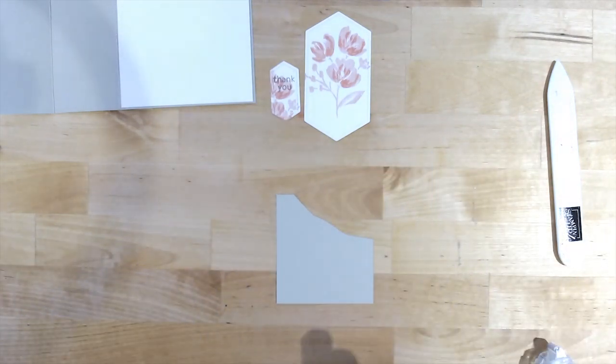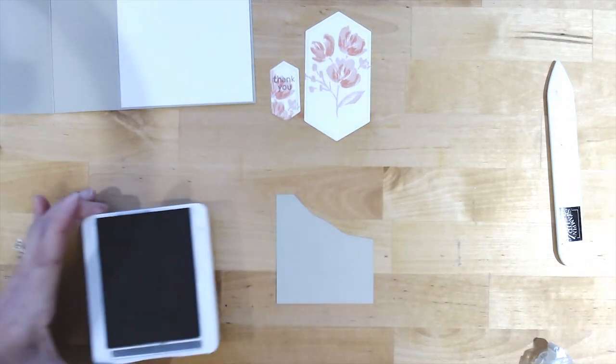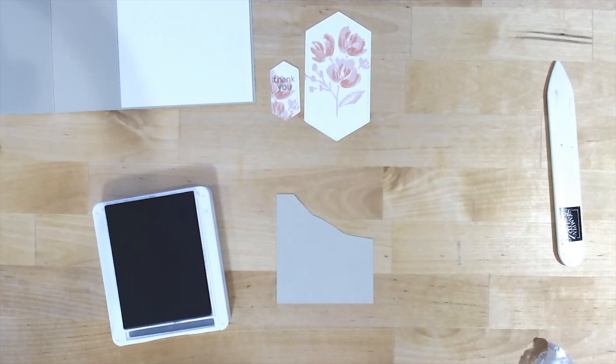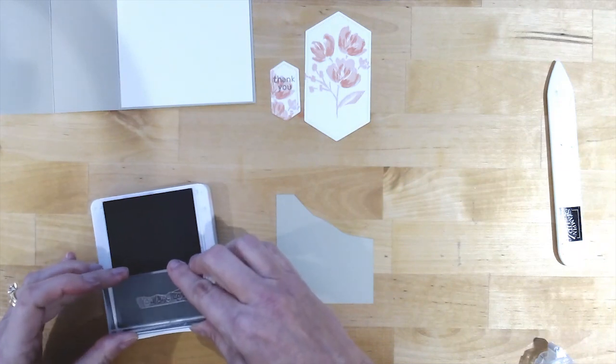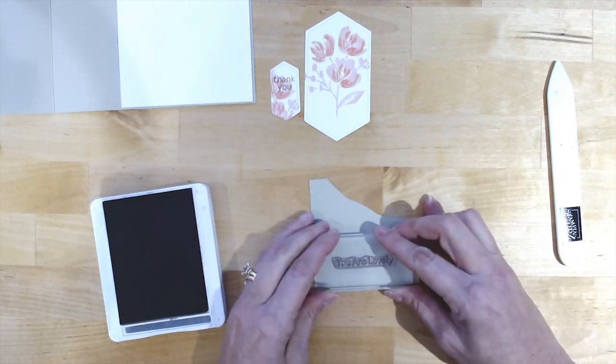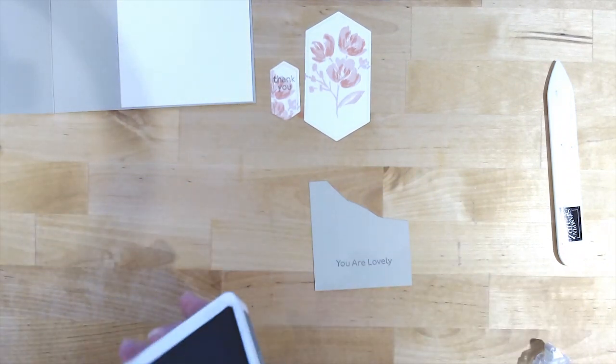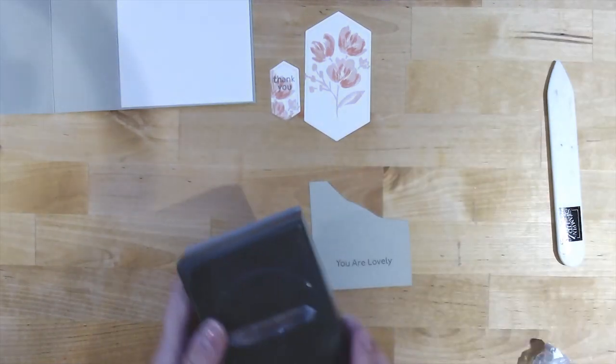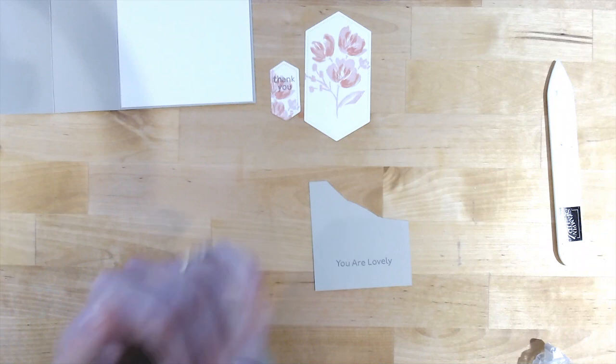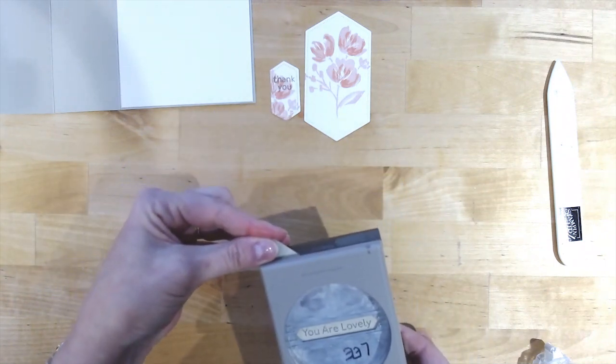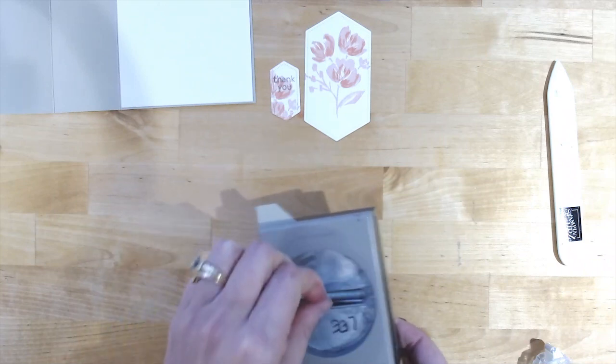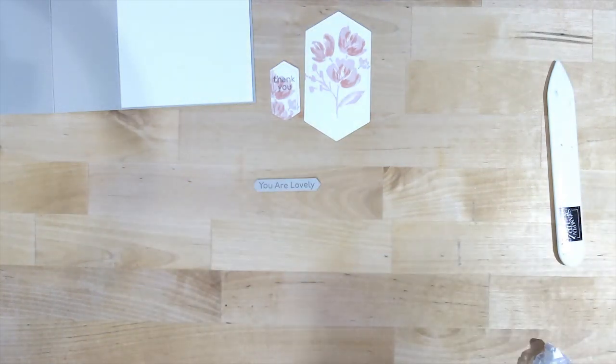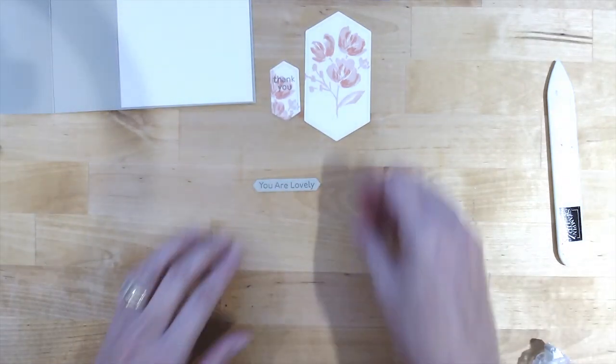We've got one more piece to stamp. So on our scrap of Sahara Sand, I'm going to bring back in the Basic Gray ink pad and my second sentiment, which is you are lovely. I'm going to ink that up. Stamp that right down on that scrap. Next, we'll bring in the Classic Label Punch. I'm going to cut that out. We're ready to assemble the rest of our card.